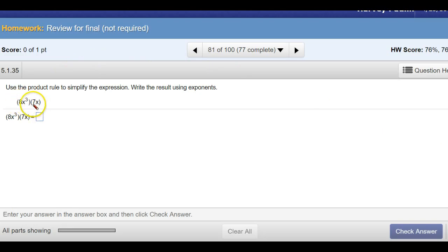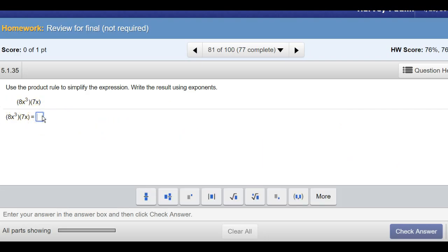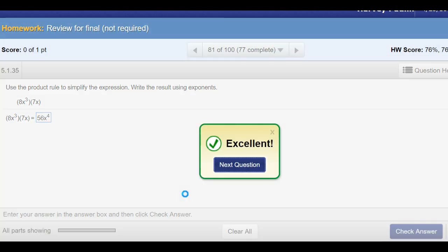So in a sense, this is a monomial times a monomial, so it's just going to be 8 times 7, which is 56. I guess we can put this right in there. 56, and then x to the third times x to the first. We just add our exponents, and that will be x to the fourth. And enter, and that's good.